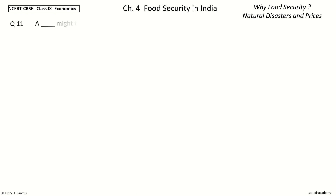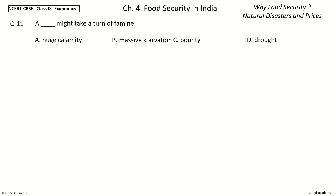Question 11: A dash might take a turn of famine. The options are: huge calamity, massive starvation, bounty, drought. And the answer is massive starvation. So, a massive starvation might take a turn of famine.